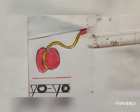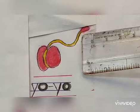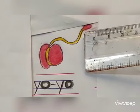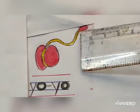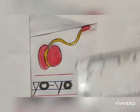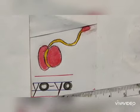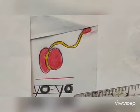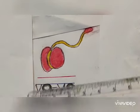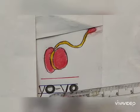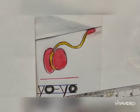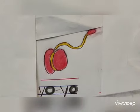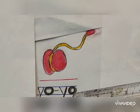Now come to the next picture. See children, this is the picture of yo-yo. To spell the word yo-yo we will say Y O Y O yo-yo. Y O Y O yo-yo.